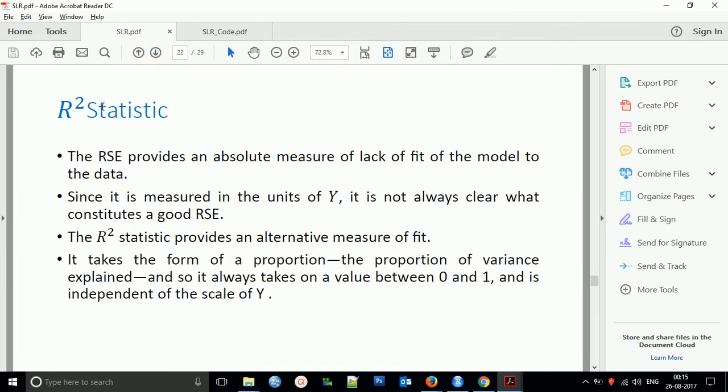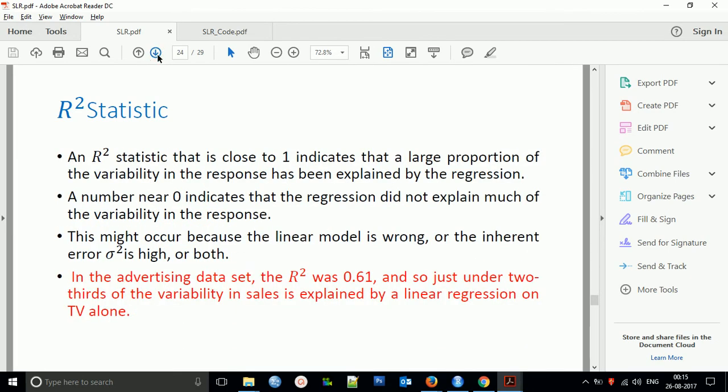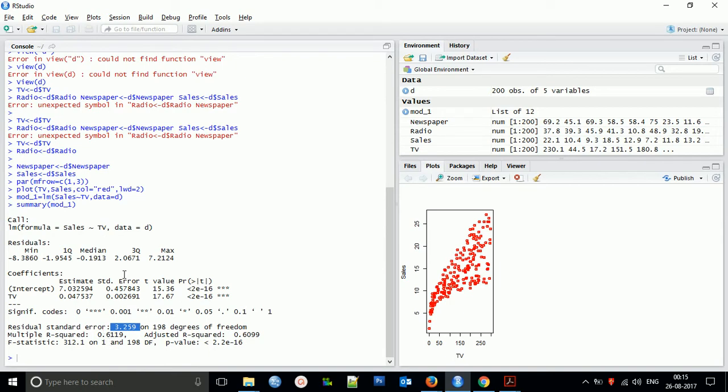Now, R-squared statistic. RSE is an absolute measurement of lack of fit. The R-squared statistic provides an alternative measure of fit. It takes the form of proportion of variance explained. It takes values between 0 and 1. I will not go into the theoretical part as we're focusing on practical things. R-squared close to 1 indicates that a large proportion of variability in the response has been explained by the variations. We have sales as output variable and we're getting R-squared of 0.61. If it's near to 1, that means it is more explained.